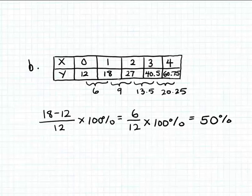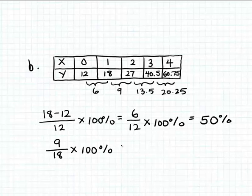Now let's calculate the next percent change. That's 27 minus 18, divided by 18, times 100%. The change is 9, divided by 18, times 100%, which again simplifies to 50%. Notice the change itself isn't steady — 6 is not the same as 9 — but we may have a steady percent change in the output, and so far these first two percent changes are constant at 50%.